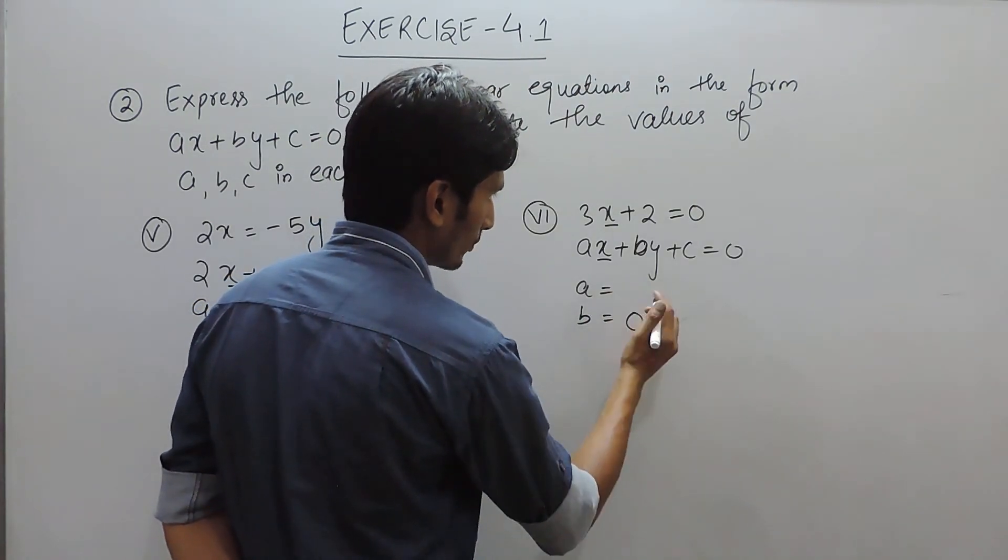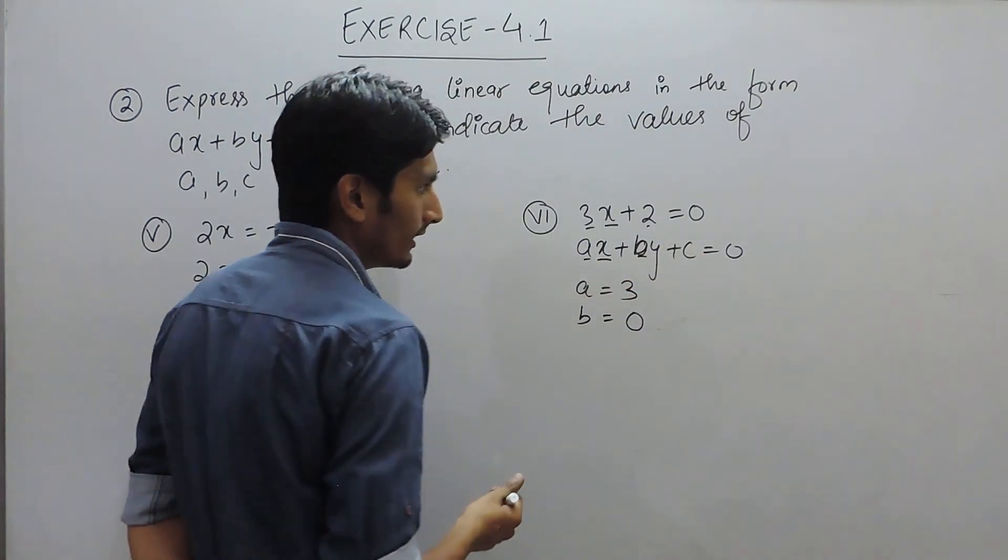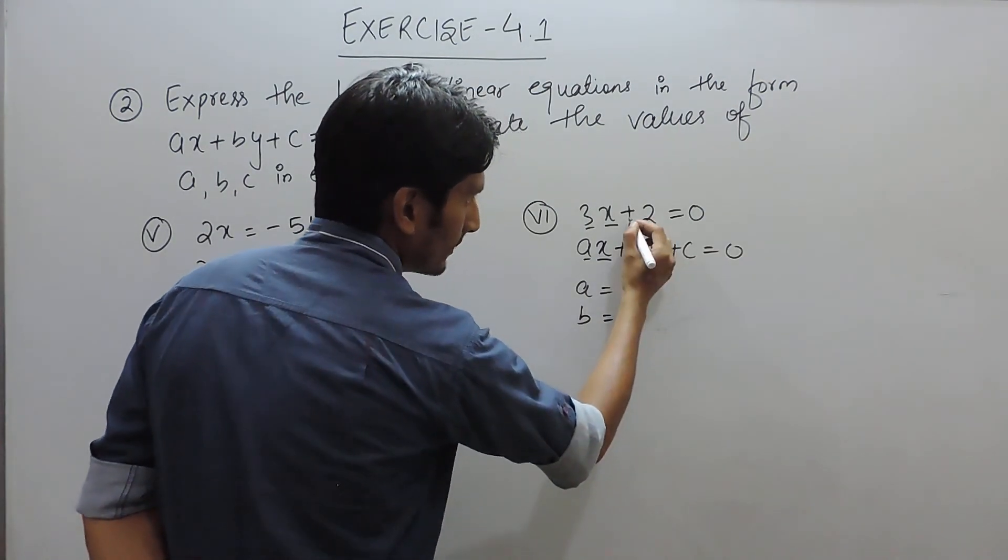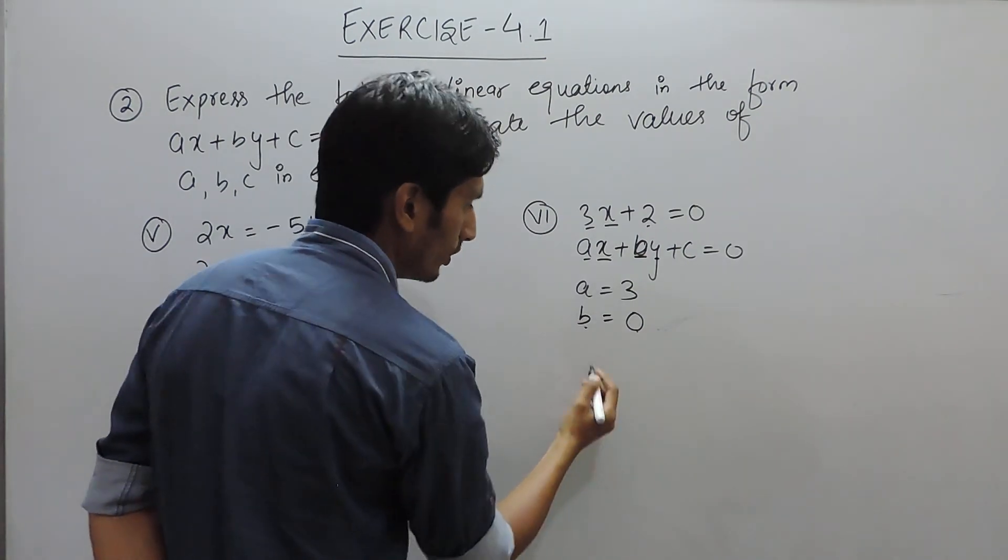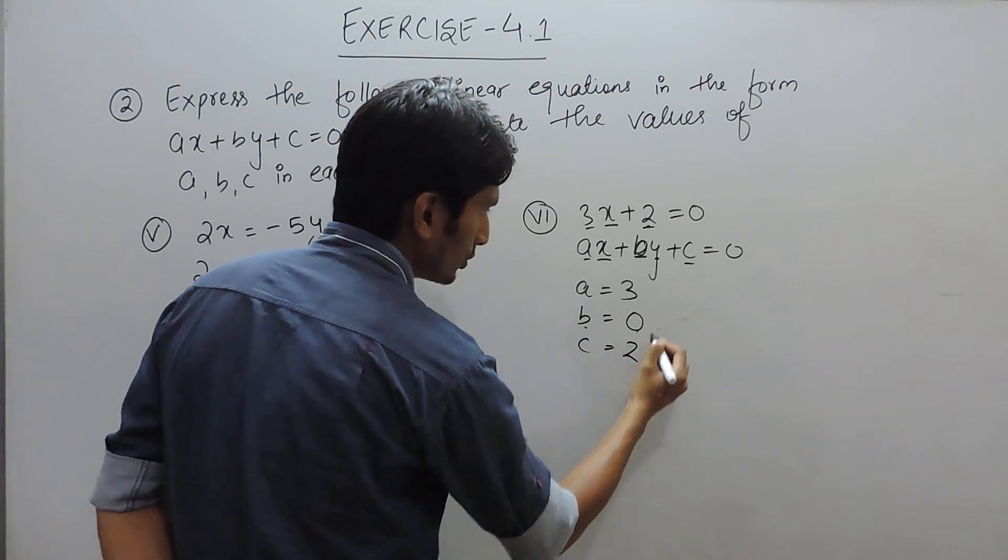So the coefficient of a is actually 3 and the coefficient of b - sorry, the coefficient of y is b. Because there is no y, so the coefficient of b must be equal to 0 and there is a constant term, so the value of c must be 2. So these are the values for this particular question.